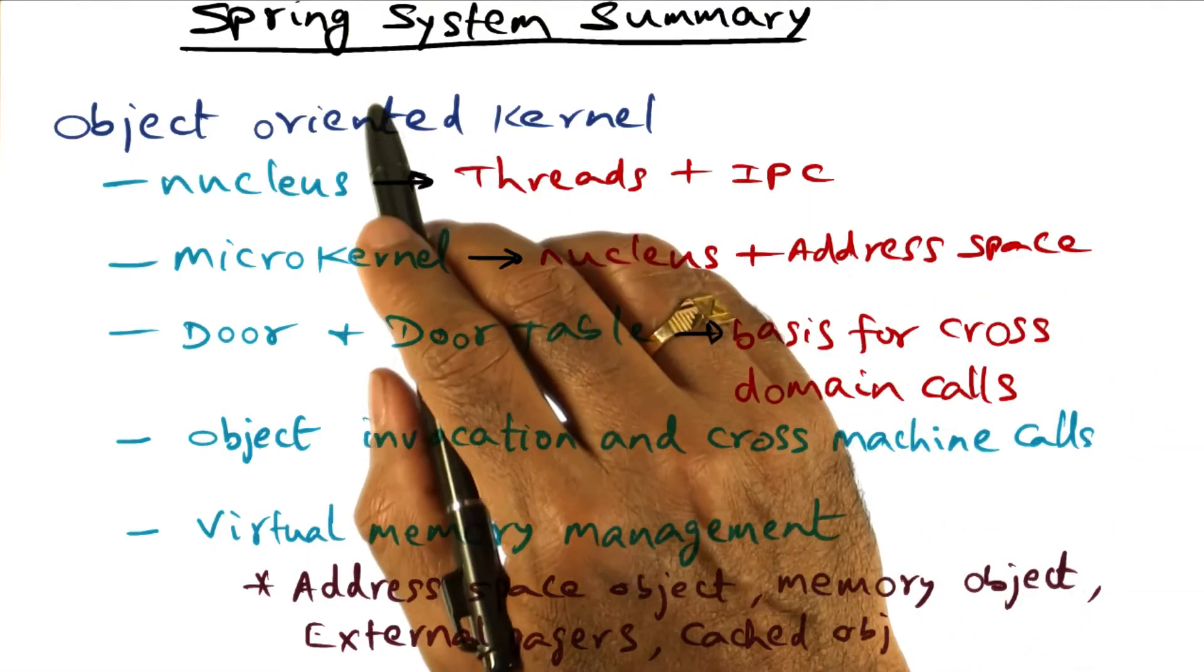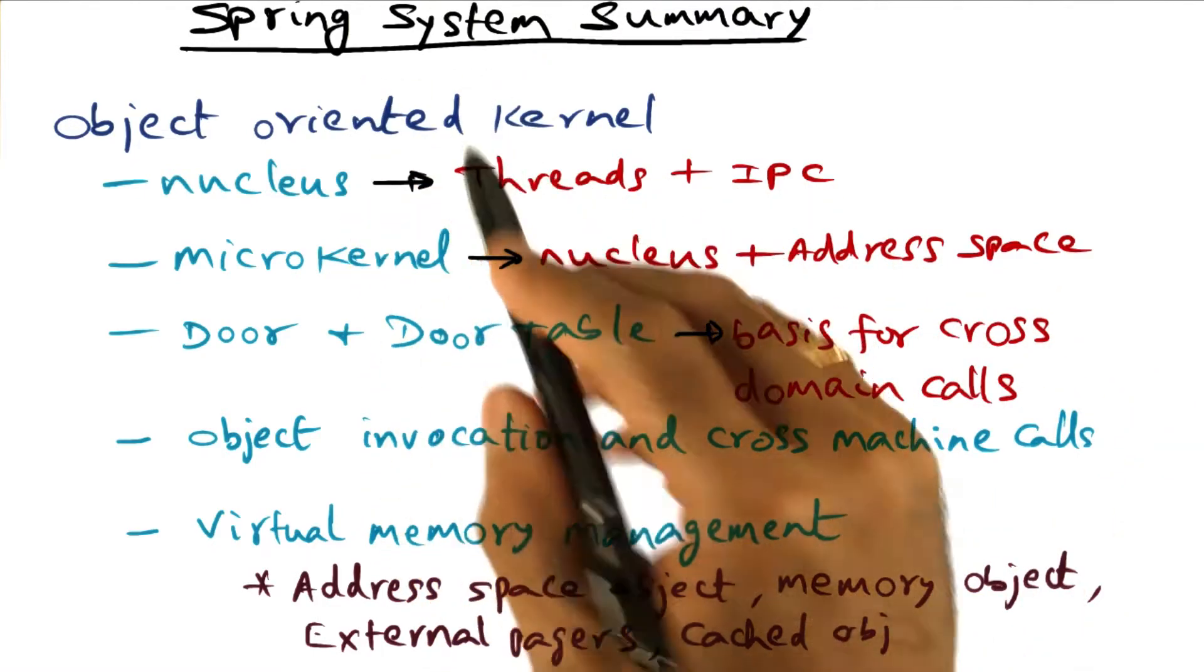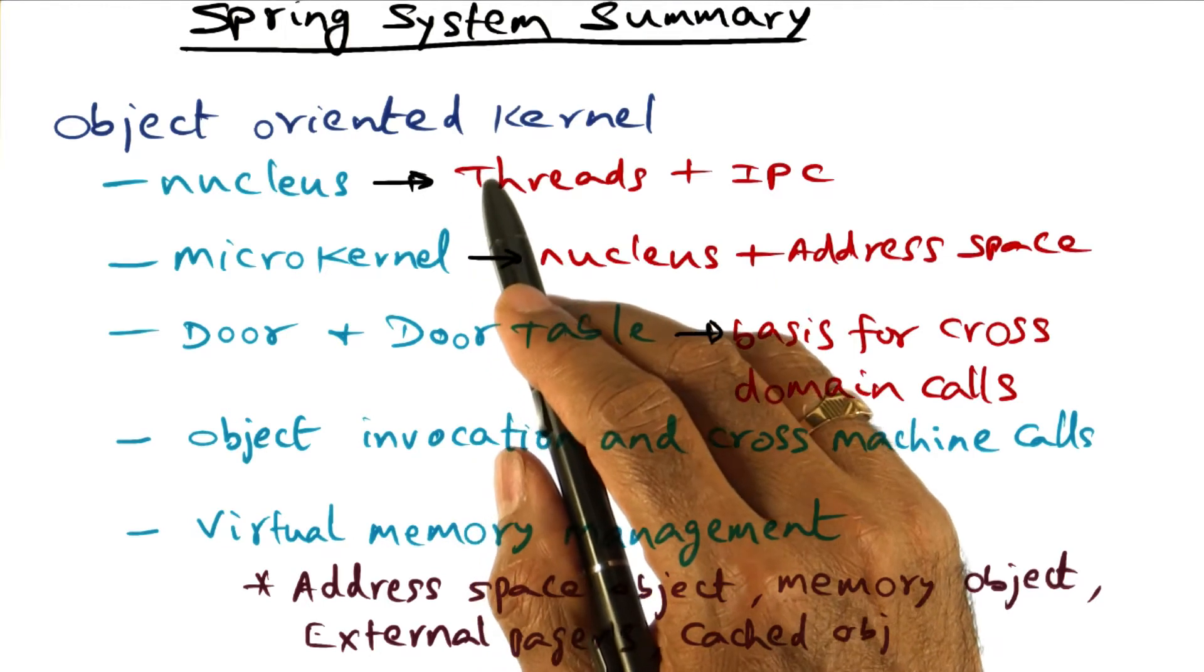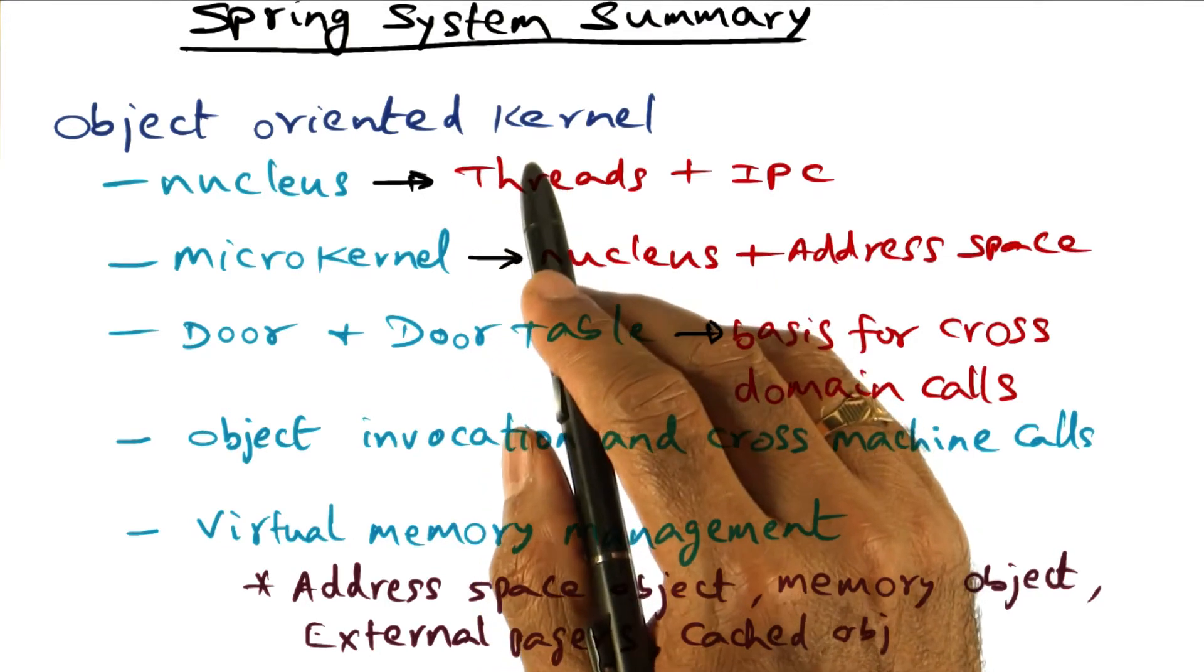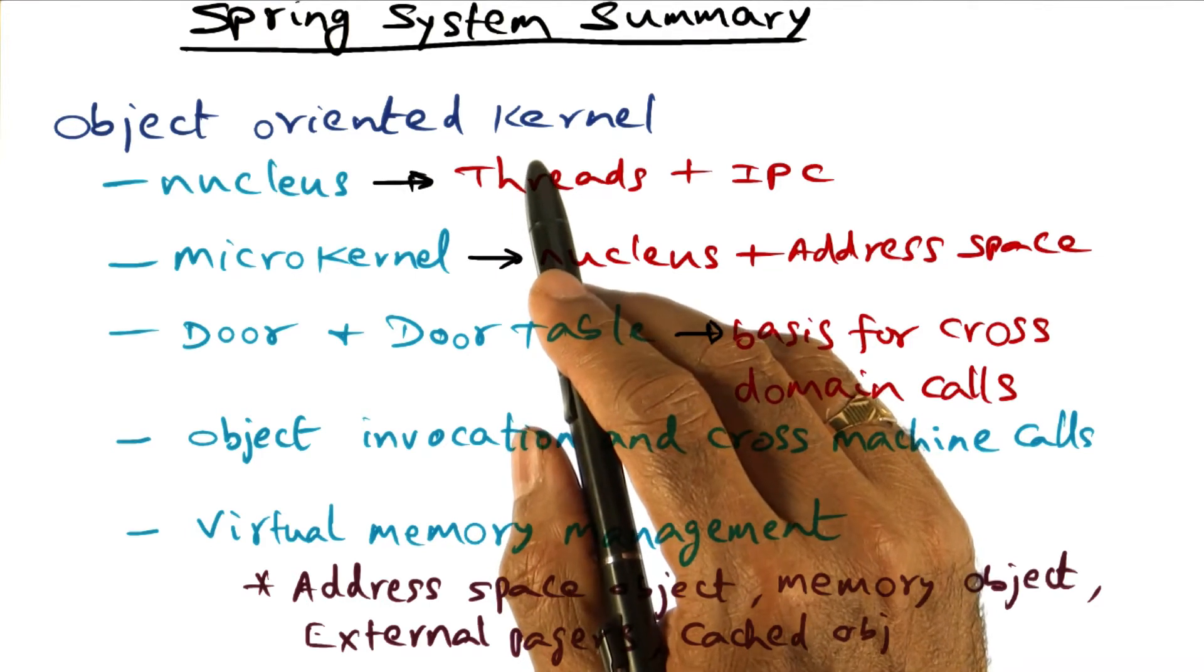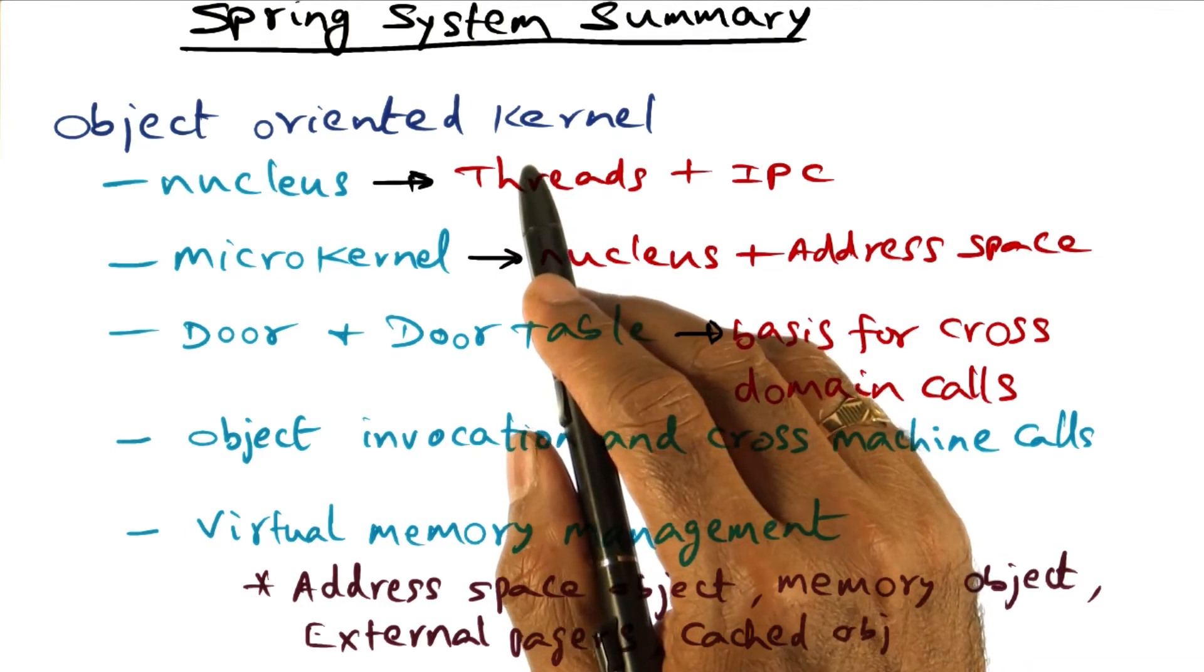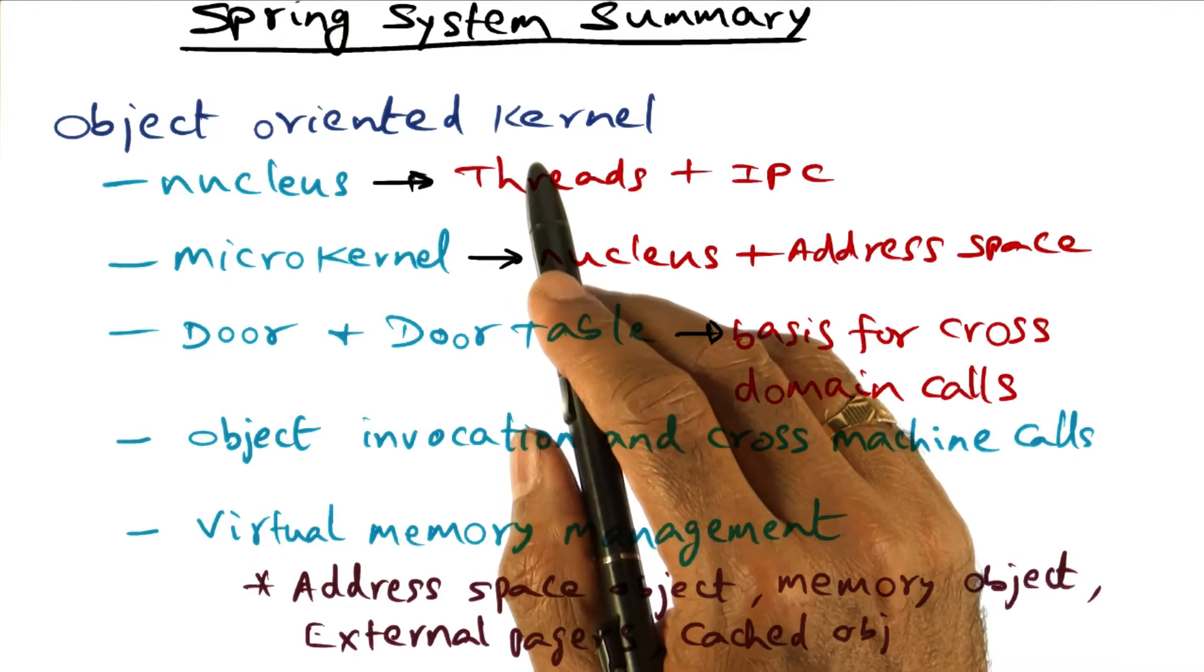To summarize the facilities available in the Spring system, object orientation - object technology permeates the entire operating system design. It's used as a system structuring mechanism in constructing a network operating system.